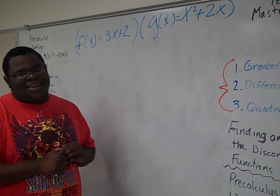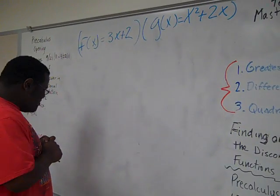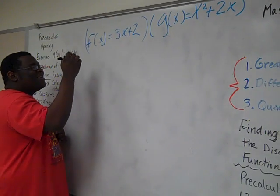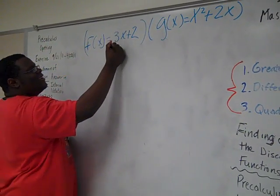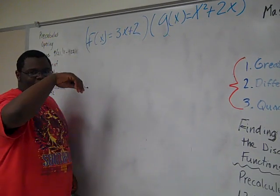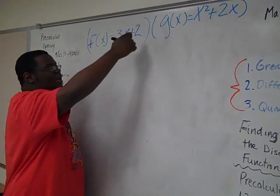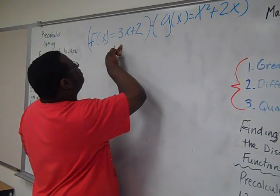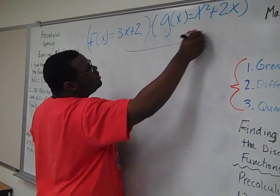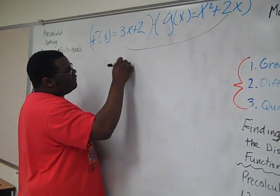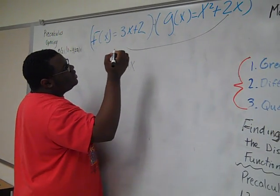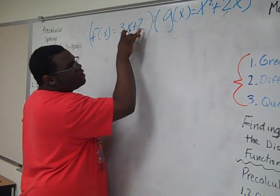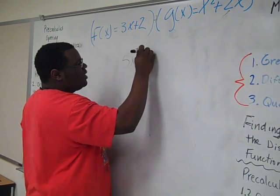What I did — I combined like terms because it said to add them together. So the 3x goes with the 2x, and it becomes 5x. And the 2 doesn't go with anything, so it just stays 2.